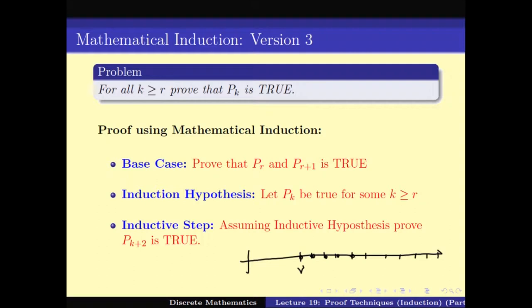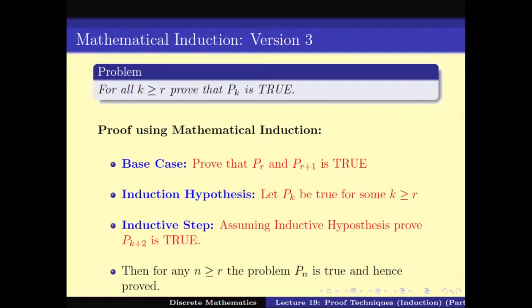One might ask why to use a different version - it all depends upon the problem. For some problems, proving Pk+1 assuming Pk is easy, whereas for some problems, proving Pk+2 assuming Pk is easy. Different problems give different ease of proving a particular step, and depending on the inductive step we can solve easily, our base case changes and the version of mathematical induction we apply changes.